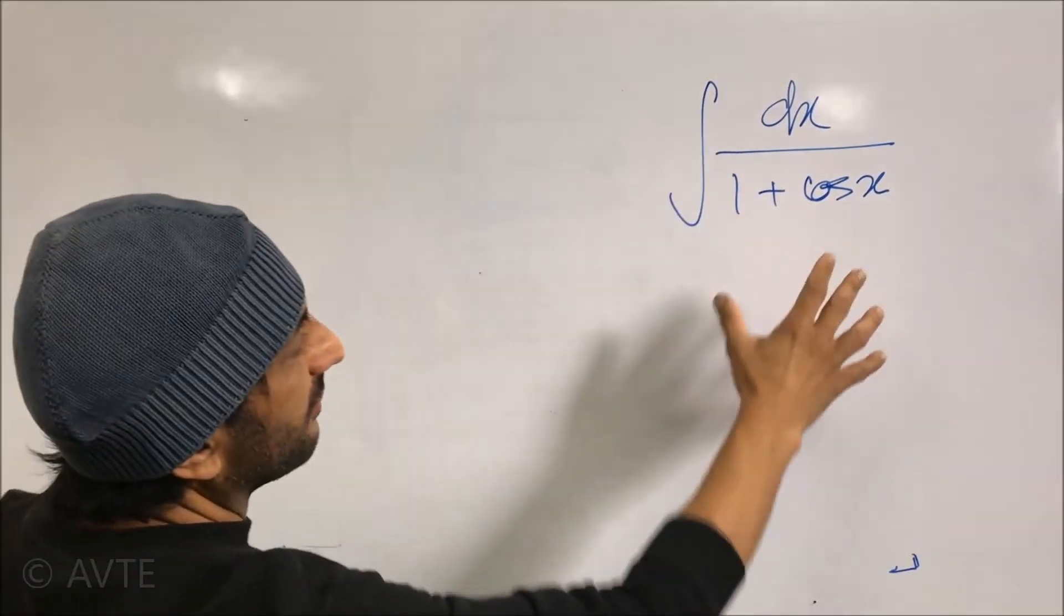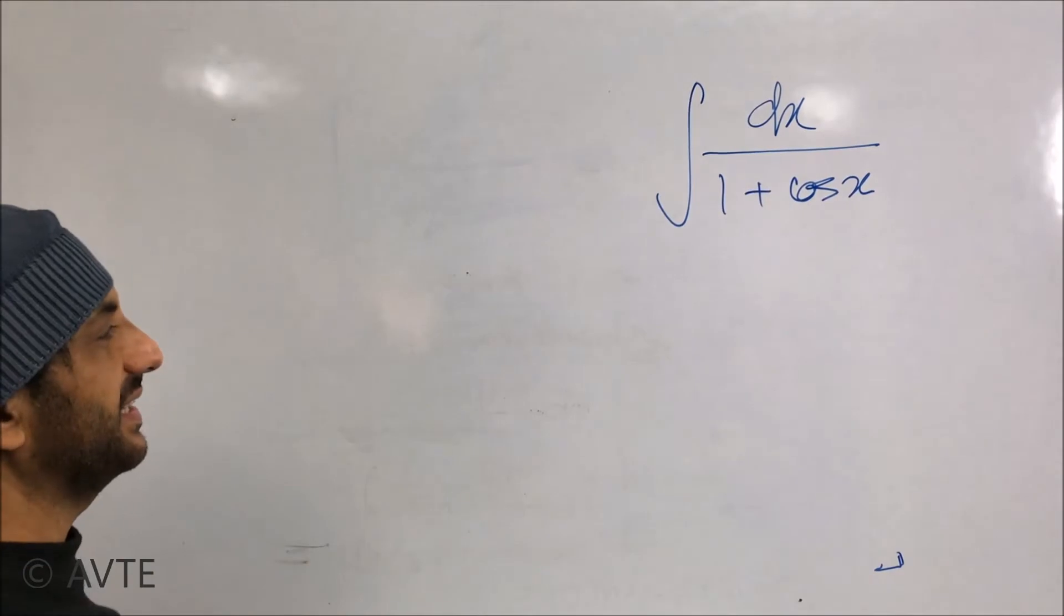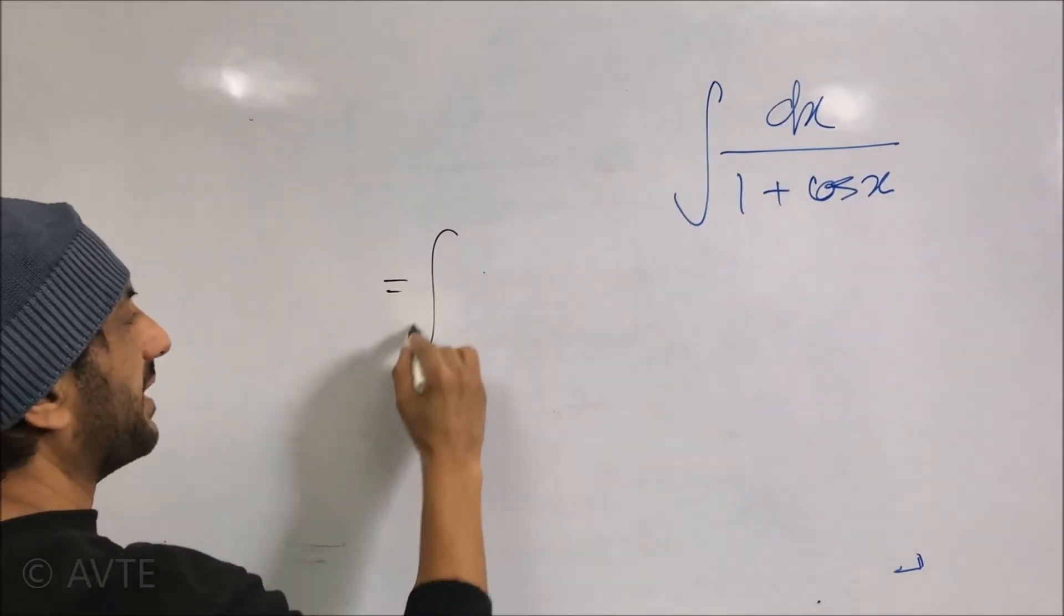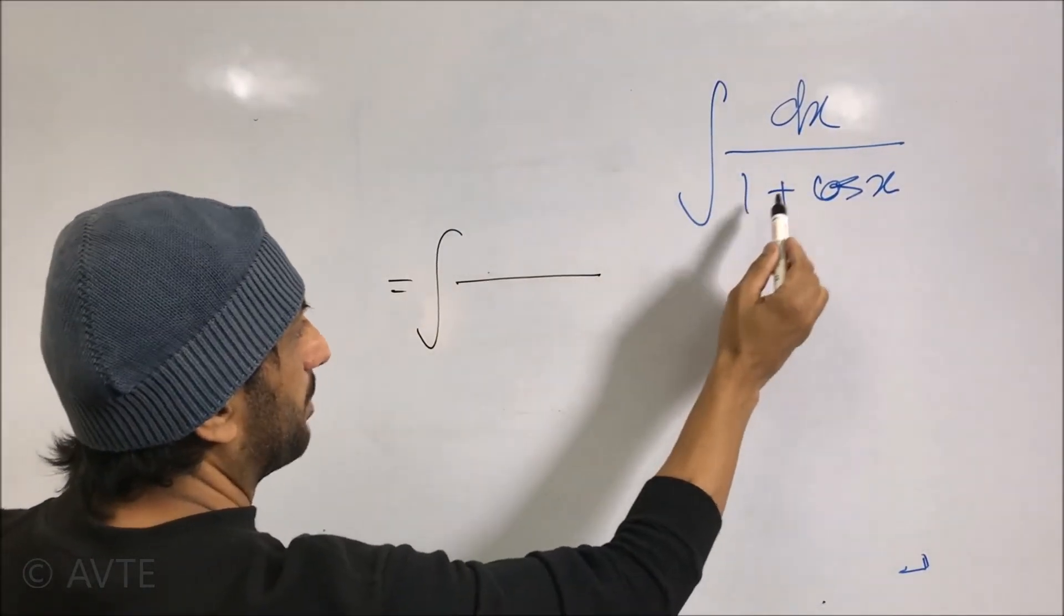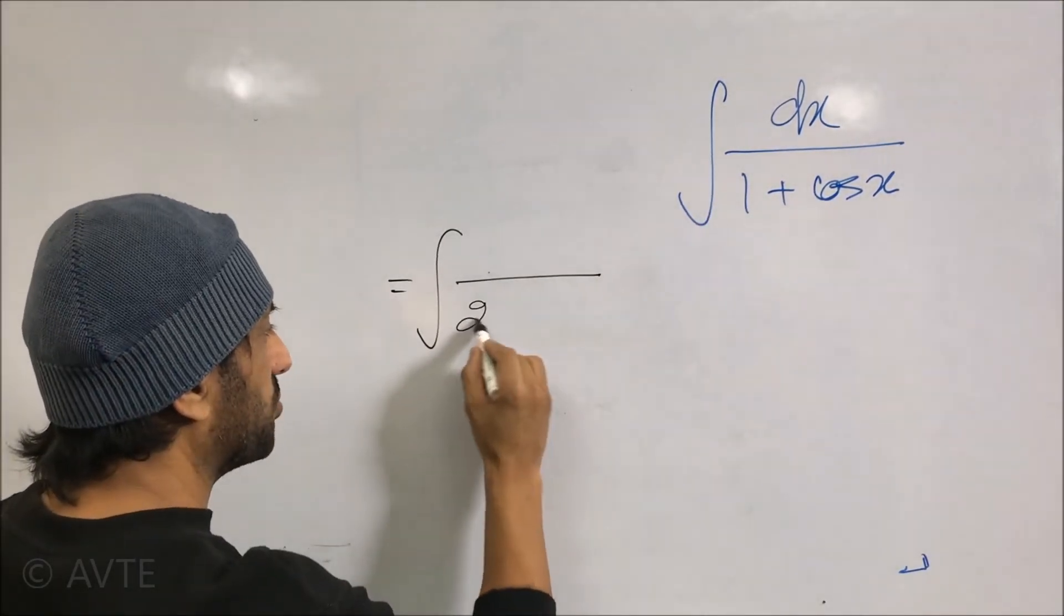Now for 1/(1+cos x), rationalization will be lengthy, so what we do we apply half angle. We write 1+cos 2θ as 2cos²θ, so this thing will turn to 2cos²(x/2).